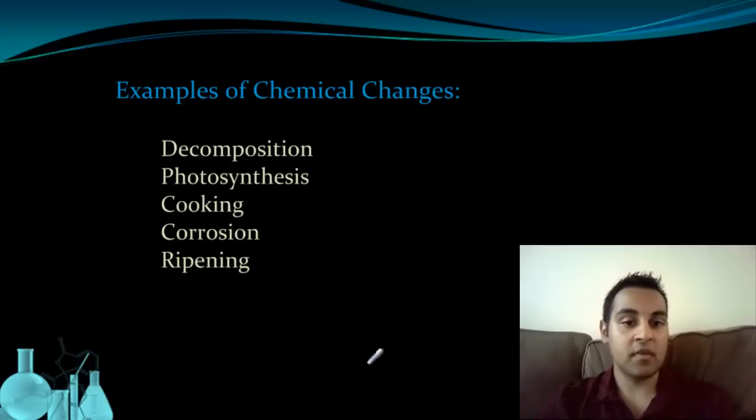To help us recognize chemical reactions in the future, let's look at some examples of things that you've probably heard of that are chemical changes. Decomposition is a chemical change. Photosynthesis is a chemical change. Cooking food is a chemical change of the food. Corrosion is a chemical change, as well as rusting that we mentioned earlier. And the ripening of fruit is also a chemical change that occurs.